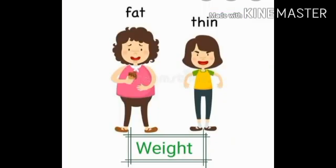Weight: some of us with linear bodies tend to weigh less, while some of us with heavier bodies tend to weigh more. Weight varies due to the difference in bone structures as well. Do all your friends weigh the same? The answer to this is no. So we have different weights, and we can say that weight varies from person to person.